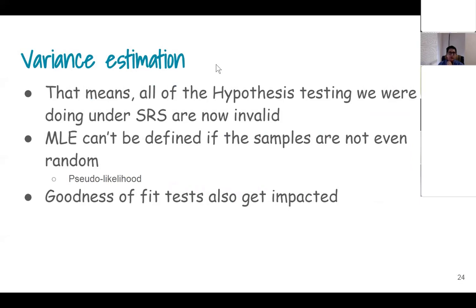Why are we so interested in variance? We are not only interested in point estimates — we are also interested in making inference about those point estimates. Hypothesis testing is related to the standard error calculation: the p-value you calculate is based on the standard errors, so if your standard error is wrong, your p-value is wrong, and your hypothesis testing conclusion will be wrong.